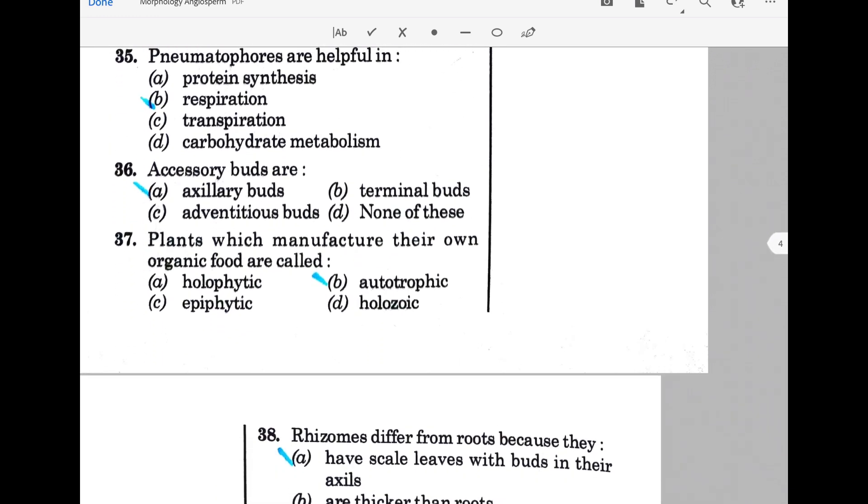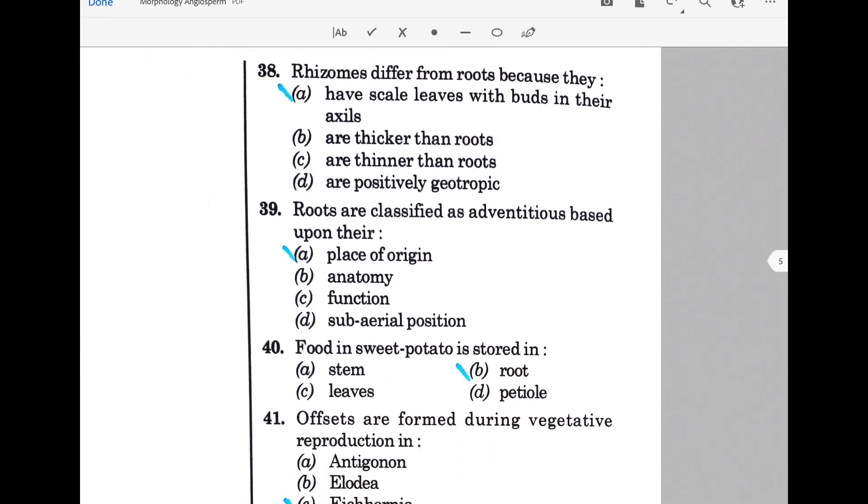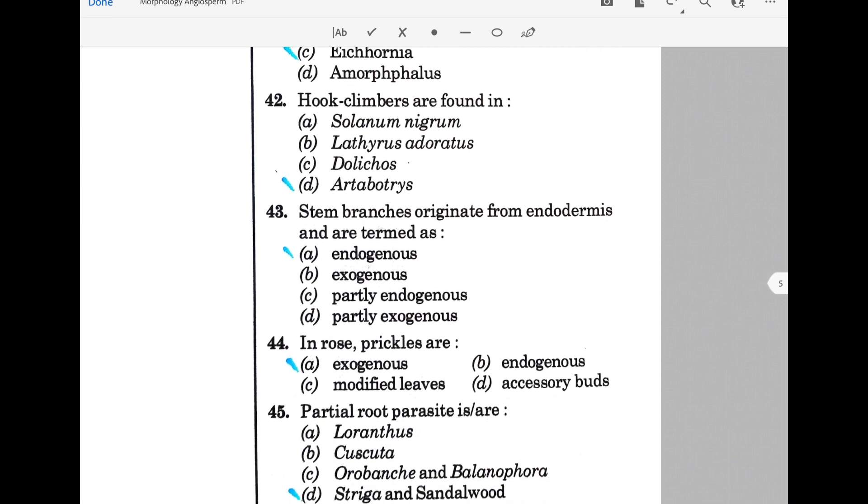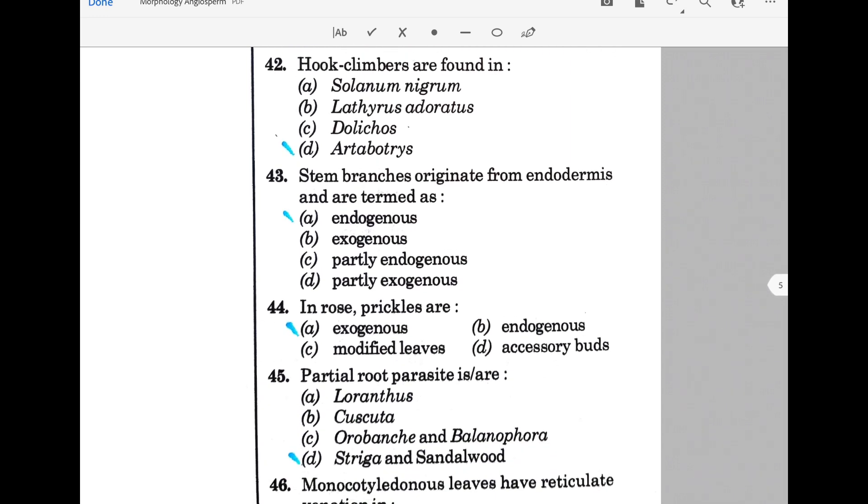Insectivorous plants grow in soils deficient in nitrogen. Viscum is an example of a parasitic epiphyte. Pneumatophores are helpful in respiration. Accessory buds are axillary buds. Plants which manufacture their own organic food are called autotrophic. Rhizomes differ from roots because they have scale leaves with buds in their axils.